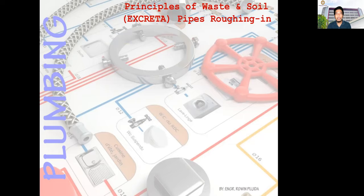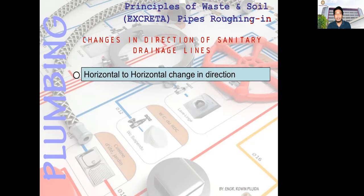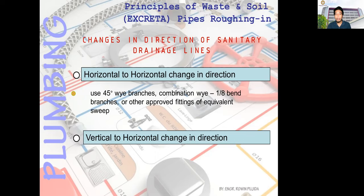The principles of waste and soil cover roughing-in installation and changes in direction of sanitary drainage lines. For horizontal-to-horizontal change in direction, use 45-degree Y branches, combination of Y and one-eighth bend branches, or other approved fittings of equivalent sweep. For vertical-to-horizontal change in direction, use 45-degree Y branches or other approved fittings of equivalent sweep — normally a 45-degree elbow and the 45-degree Y.